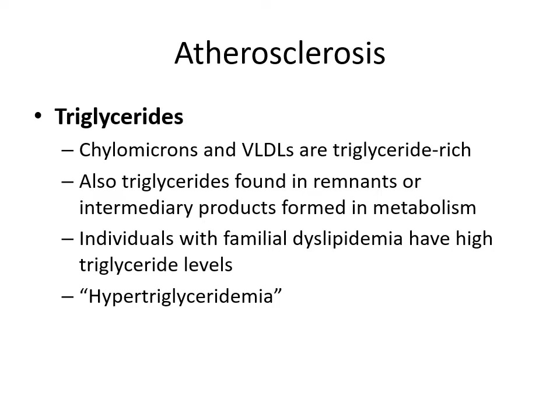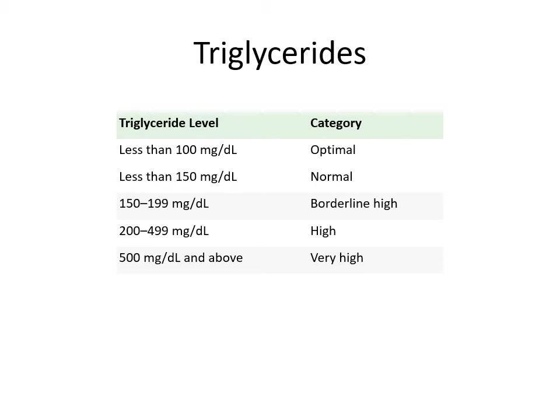Looking at triglycerides, chylomicrons and VLDLs are triglyceride-rich. Triglycerides are also found in remnants or intermediary products formed in metabolism. Individuals with familial dyslipidemia have high triglyceride levels — hypertriglyceridemia. Here we have our range where we'd like to see less than 150, but less than 100 is ideal.